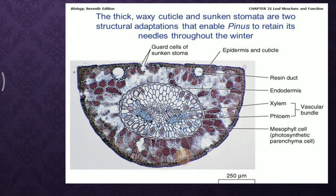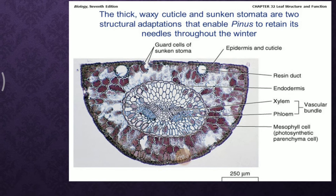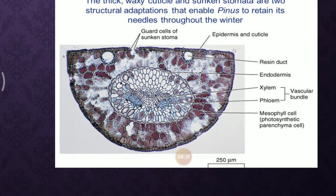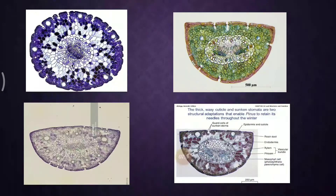The guard cells of the sunken stomata are clearly visible, along with the epidermis, cuticle, and resin ducts. In this species, two resin canals are present. The endodermis is also seen within the needle, and the vascular arrangement — xylem and phloem — is of the conjoint collateral type. Mesophyll cells, which are the photosynthetic parenchyma cells, are also present.